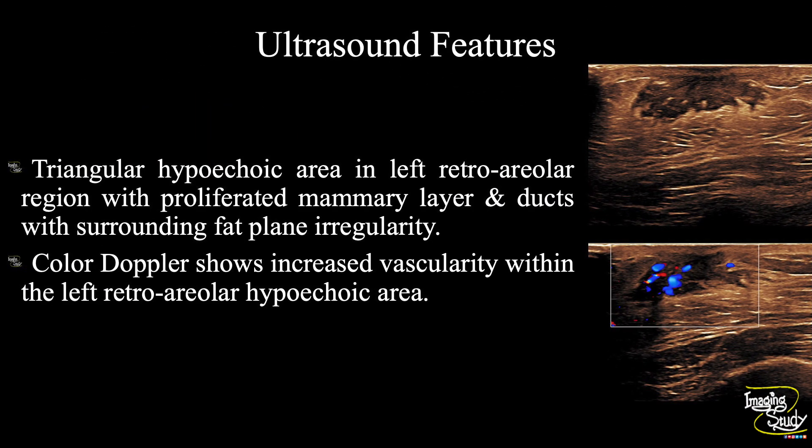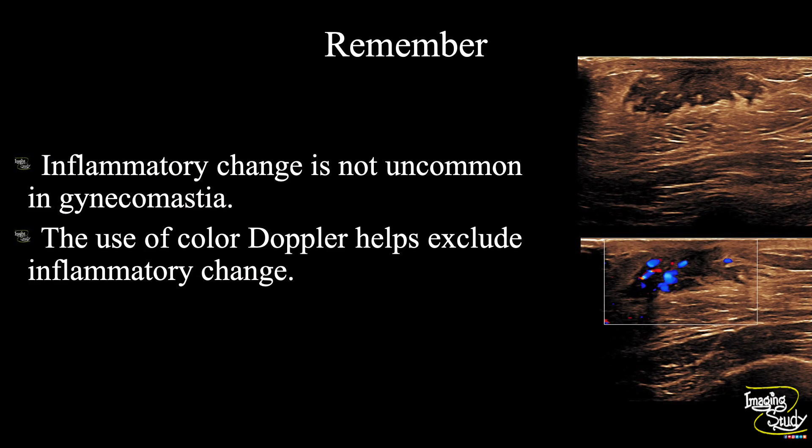In summary, a triangular hypoechoic area is noted in the left retroareolar region with proliferation of the mammary layer and ducts, and surrounding fat plane irregularity. Color Doppler shows increased vascularity within the left retroareolar hypoechoic area. These features conclude this as a case of gynecomastia with mastitis. The take-home message is that inflammatory change is not uncommon in gynecomastia, and the use of color Doppler may help identify this inflammatory change.